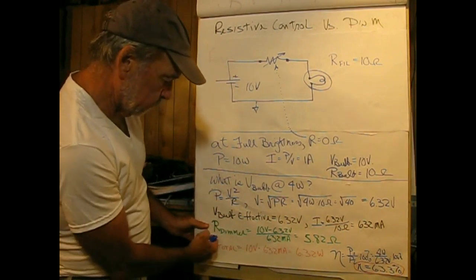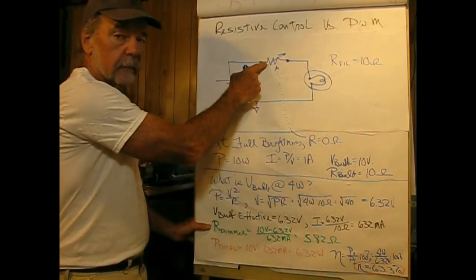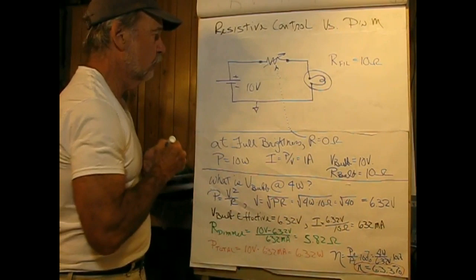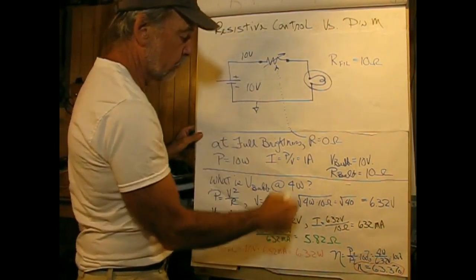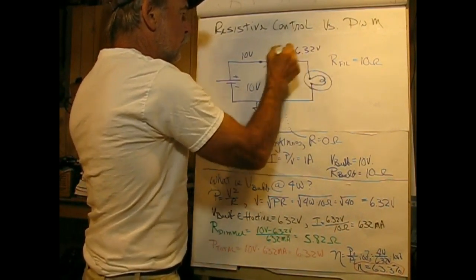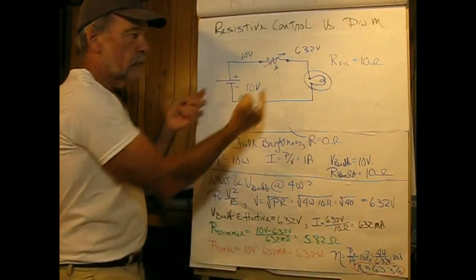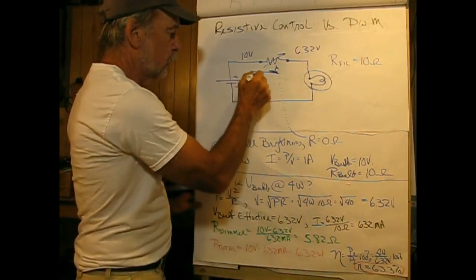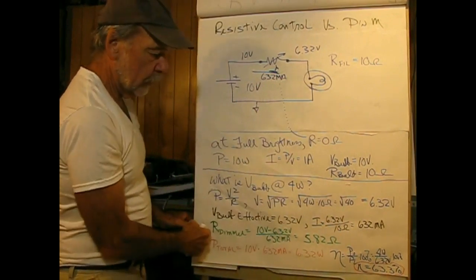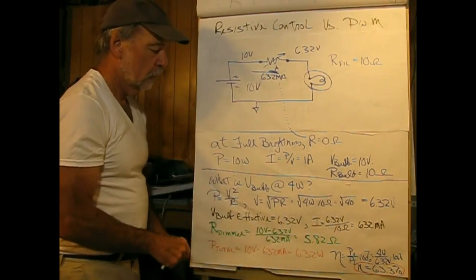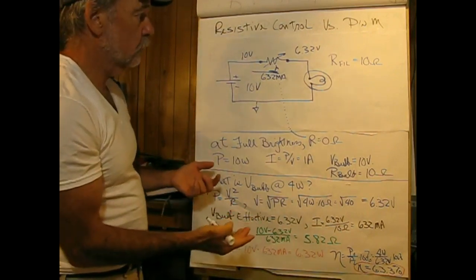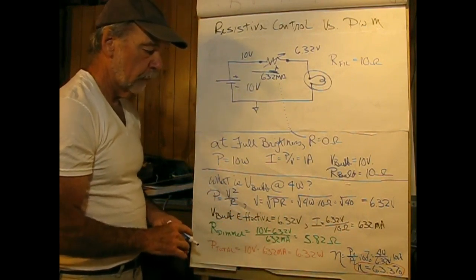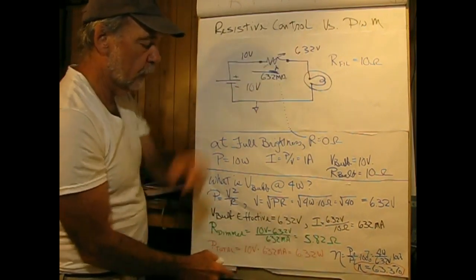Going further, the resistance across the dimmer — what's the value of R? It's going to be equal to the difference in voltage: we have 10 volts on one side and 6.32 volts on the other side. So this is going to be the difference between these two voltages divided by the current flow, which is 632 milliamperes — and we find that the resistance of the dimmer at this duty cycle is 5.82 ohms. So when this is 5.82 ohms, the bulb ends up dissipating 4 watts.